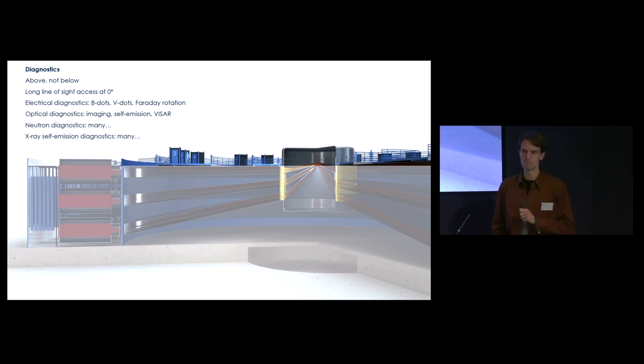In terms of diagnostics, there will be many electrical diagnostics - B dots and V dots. We've productively used fiber-based Faraday rotation on machine three to measure currents and expect to do that again. There will be a large suite of optical diagnostics for amplifier verification and validation using optical imaging and self-emission. We also want to do visor to measure velocities. Then neutron diagnostics, many, with very large dynamic range - not an individual diagnostic with large range, but a suite covering a very large range. We need diagnostics that help when it's not working to fix it. Also X-ray self-emission diagnostics.